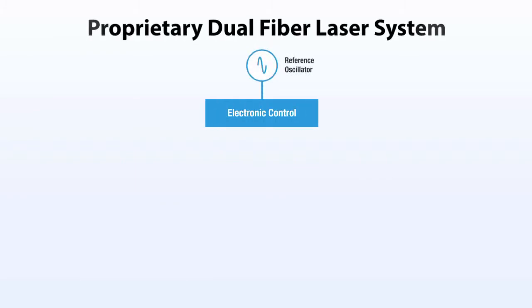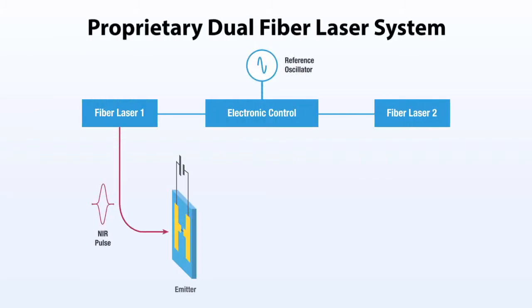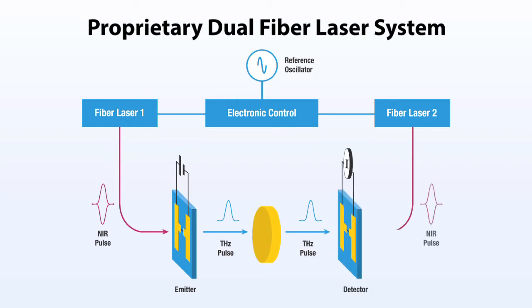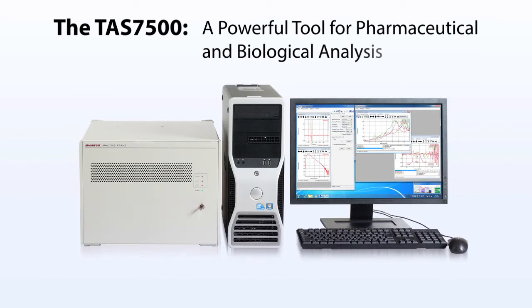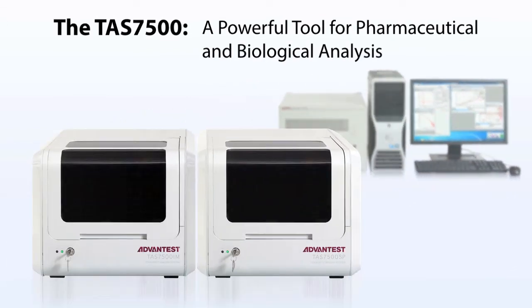Both the spectroscopy and imaging units share the same proprietary dual-fiber laser detection system. This entirely electro-optic device delivers high-speed analysis and high reliability in a small package. Advantest's TAS7500 terahertz system provides the flexibility to characterize a wide range of materials, from pharmaceutical compounds to biomolecules and live cells.